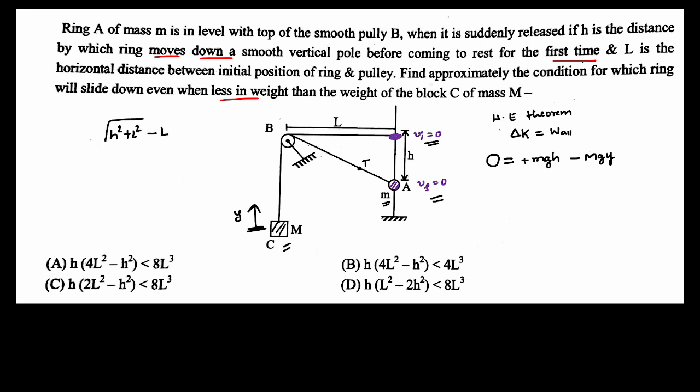...minus L is going to be y. I hope you can easily observe that from the constraint here. So using that, here we will have small m times h being equal to capital M times y, which is root of h squared plus L squared minus L. This is what we have.